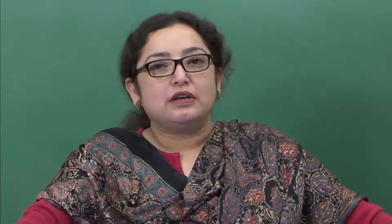I would like you to spend some more time looking at the images to see how different they are stylistically. I have purposefully chosen artworks that are very distinctive in their stylistic identity — they can stand out as the visual identity of a particular region, even though those regions are quite close by. Next we are going to see the Patachitra with the same theme of Ramayana from Murshidabad — another very close district. This Patachitra was collected by Guru Sadaadath in the 19th century and is a 16-panel image, 10 feet 10 inches by 2 feet 1 inch.